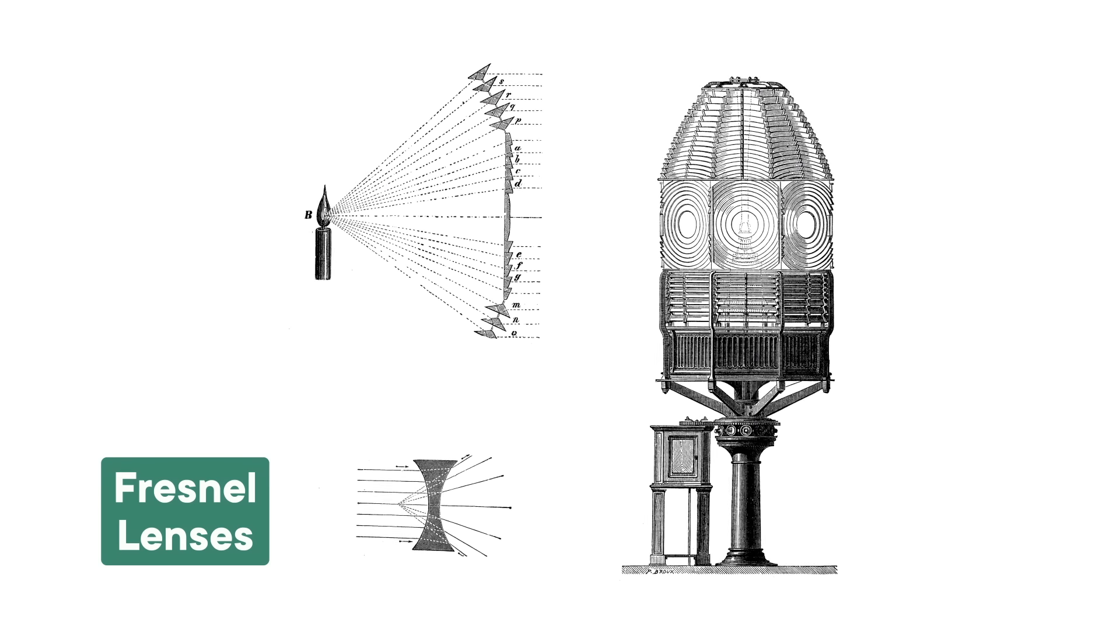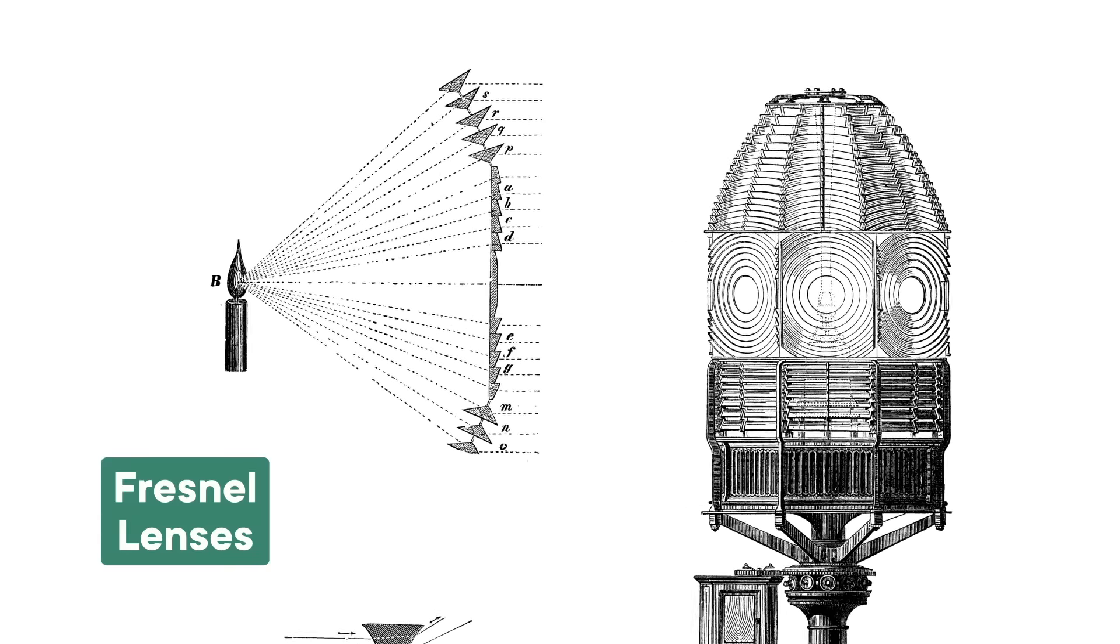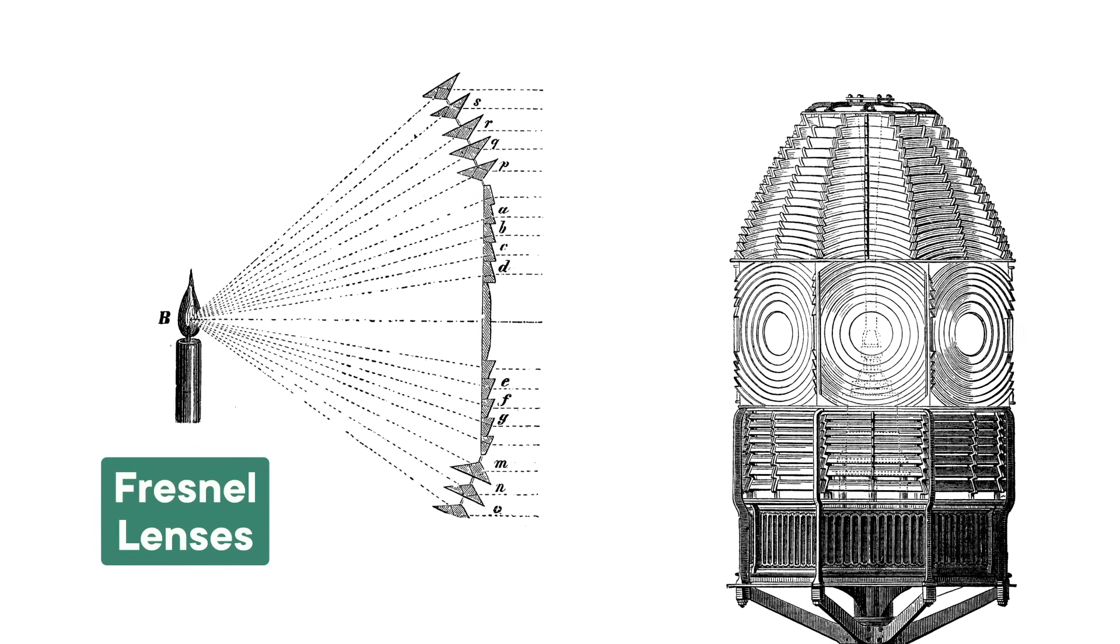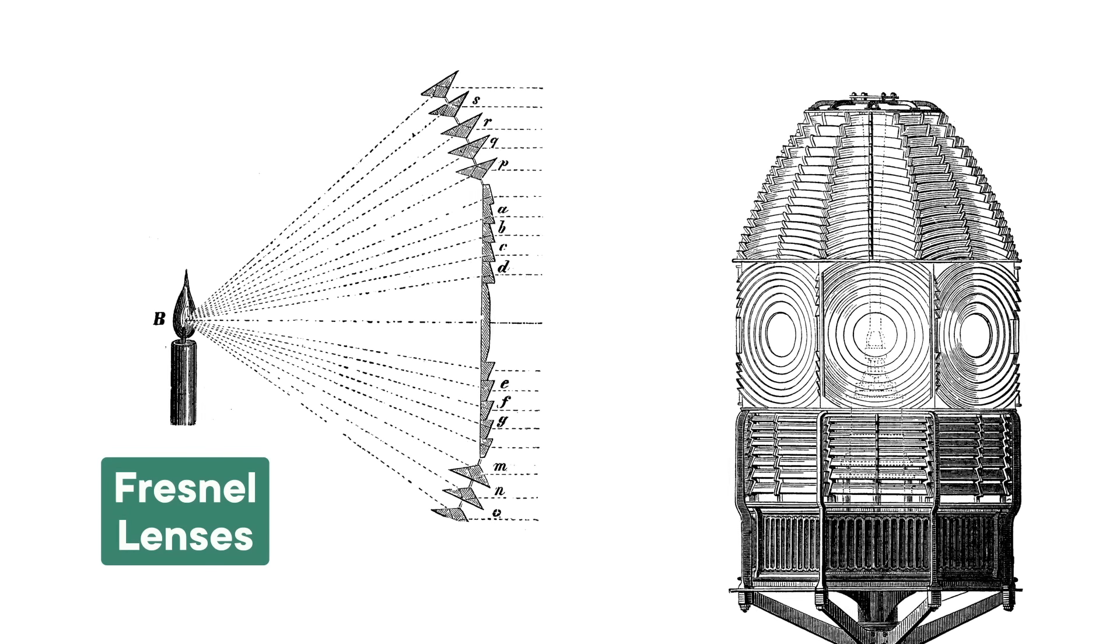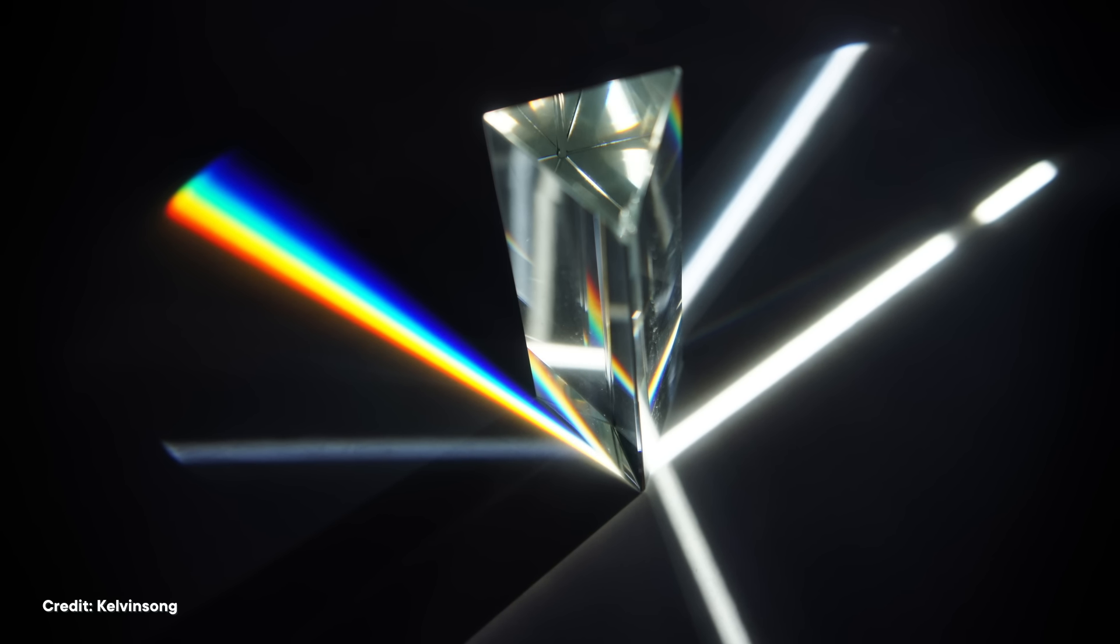To do this, you can't just use a regular lens. You need the fancy ones from the beginning of the video. Fresnel lenses collect light and force all the individual rays to travel in basically the same direction, by making use of not one large smooth surface, but a bunch of angular prisms. Prisms also refract light like a standard curved lens does. But instead of focusing all the light down to a focal point, they point it all out in parallel beams.